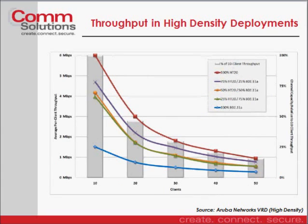One of the things we also have to be concerned about is a variety of client types. We don't necessarily always have a homogeneous group of clients that all use the same types of radios, the same band, and the same drivers. As we bring BYOD devices into our environment, that variety increases even more. This chart is really meant to show the differences between an environment where you have all high-throughput capable 802.11n clients and then a mix of some legacy 802.11a clients in that same space, and how throughput will decrease dramatically once we have a mixed mode of clients.